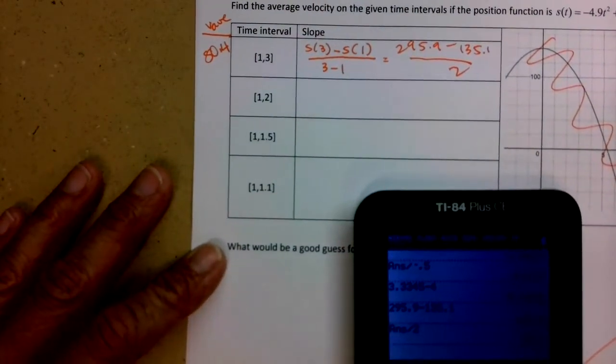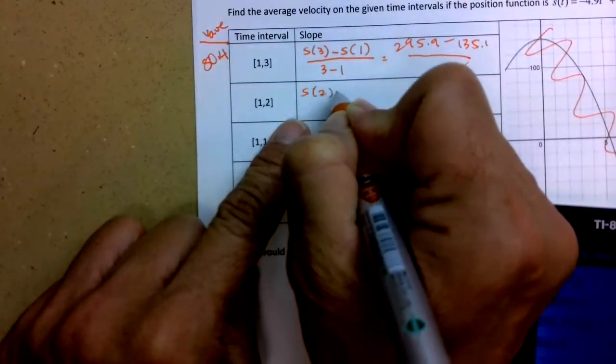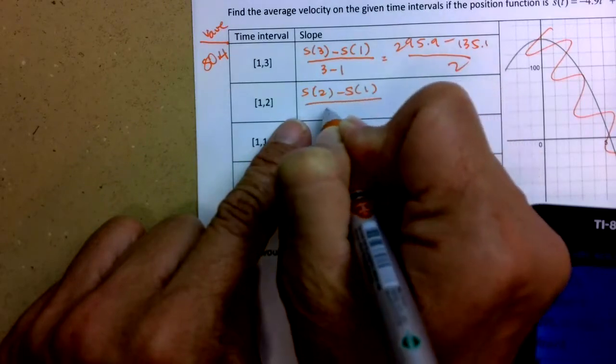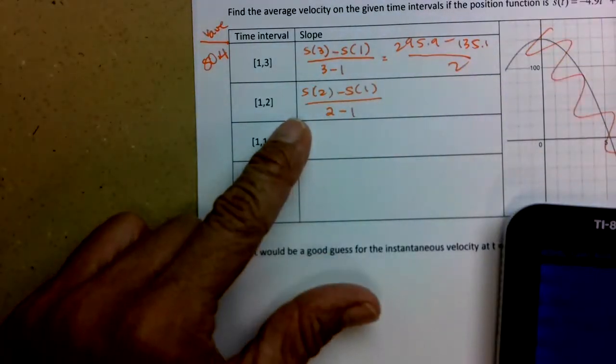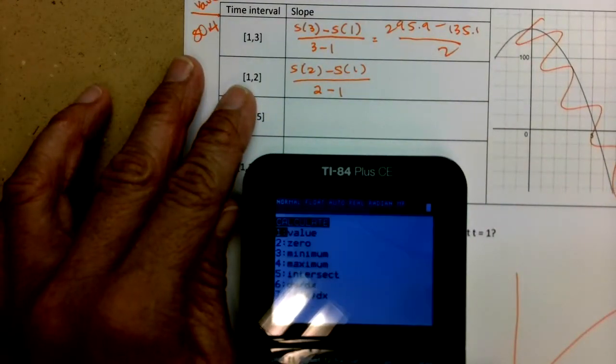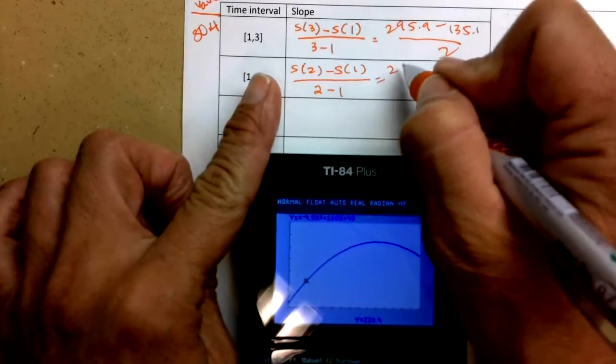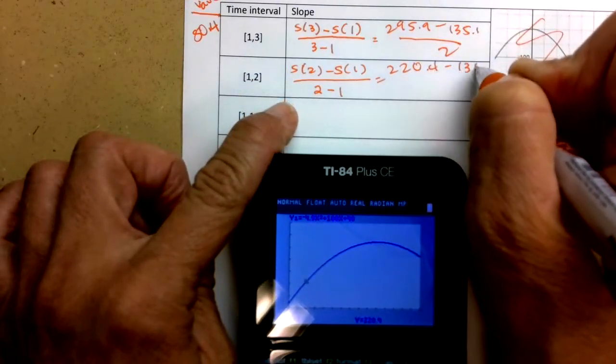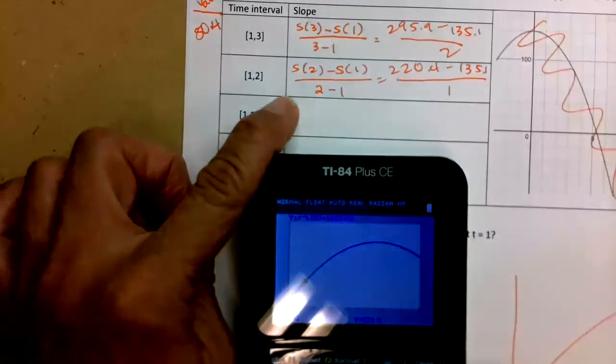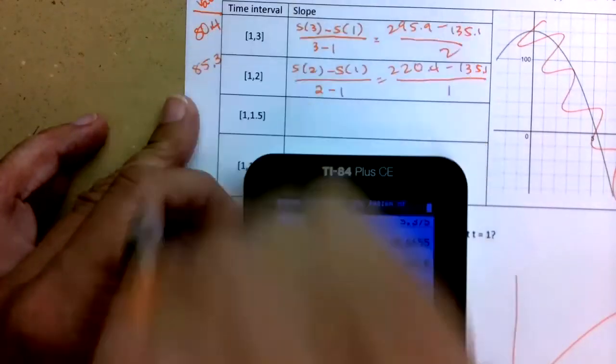Let's do the next one. So between 1 and 2. So again, this time, s of 2 minus s of 1 divided by 2 minus 1. So go back to your graph and calculate a value. And we want the value at 2. We already have the value at 1. We don't need to do that. So 220.4 minus 135.1 divided by 1. 220.4 minus 135.1. So 85.3.